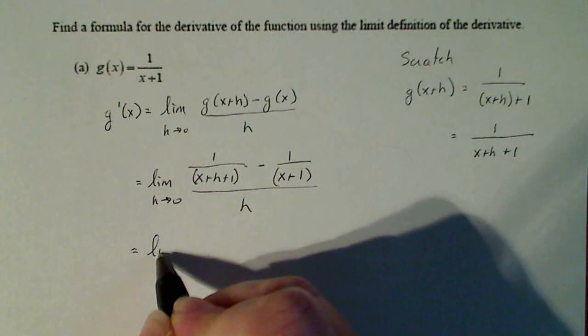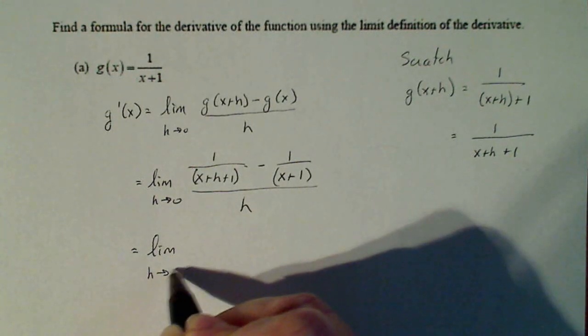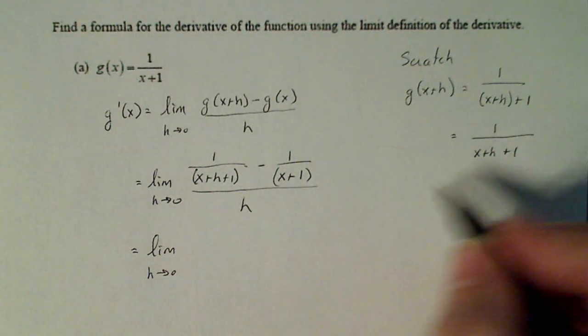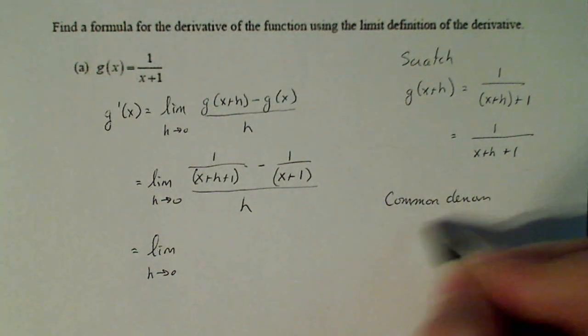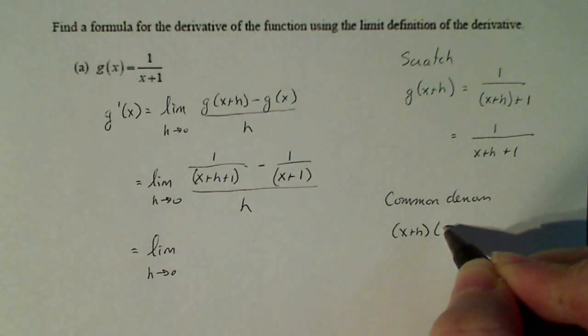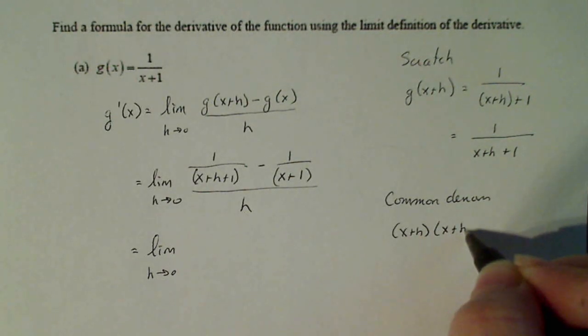So this is equal to the limit as h goes to zero. Now I have to find the common denominator and I'll just write over here. The common denominator is (x+h+1) multiplied by (x+1).